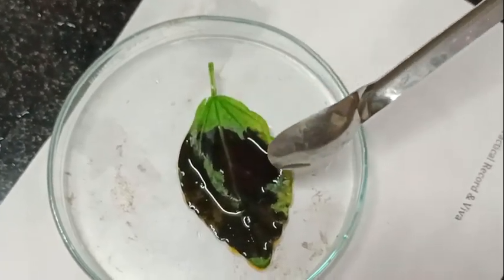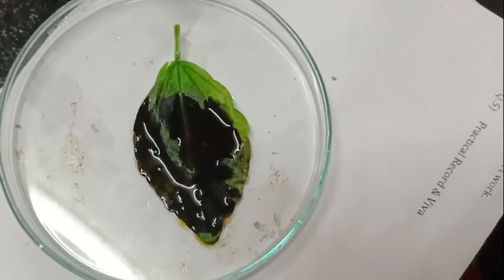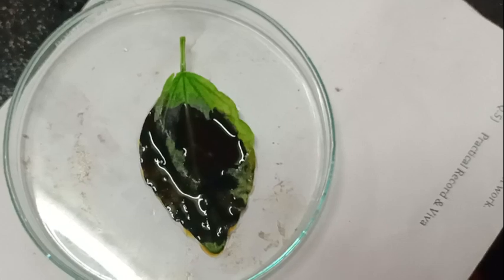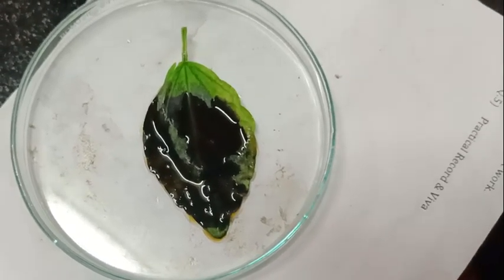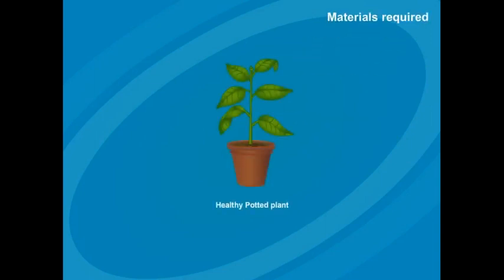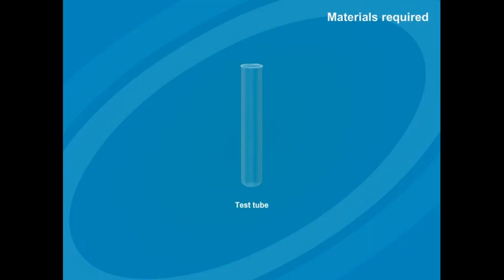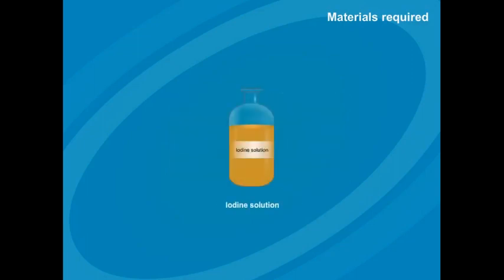So now we are going to move to the next activity — to show that sunlight is necessary for photosynthesis, and also to show that chlorophyll is necessary for photosynthesis. Let's look at these two activities. To show that sunlight is necessary for photosynthesis.